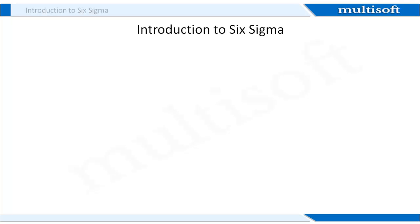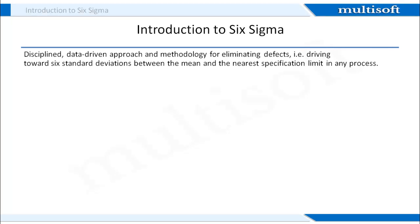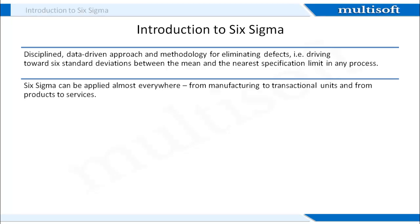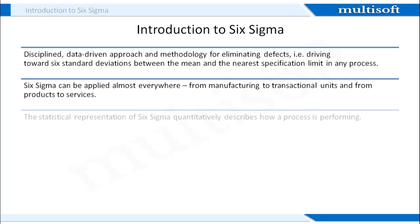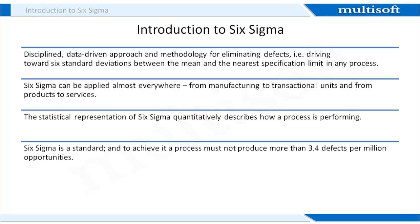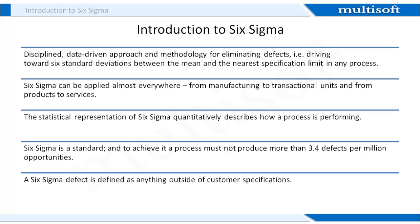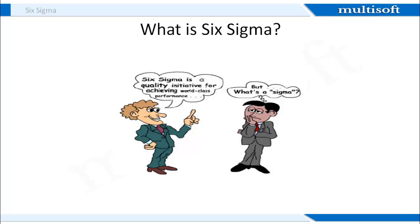Let's start with our sneak preview section. First, let's understand what is Six Sigma. It is a disciplined, data-driven approach to eliminate defects. This methodology can be applied almost everywhere, from manufacturing to transactional units and from products to services. The statistical representation of Six Sigma quantitatively describes how a process is performing. Six Sigma is a standard, and to achieve this benchmark, a process must not produce more than 3.4 defects per million opportunities. A Six Sigma defect is defined as anything outside of customer specifications. Six Sigma is a structured, project-based approach that is adopted to achieve breakthrough improvement.